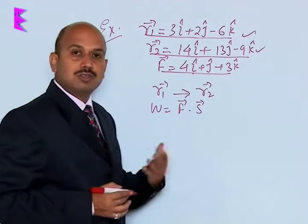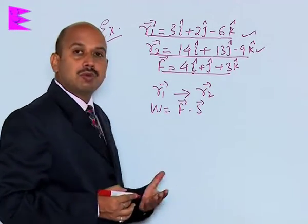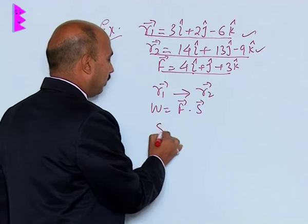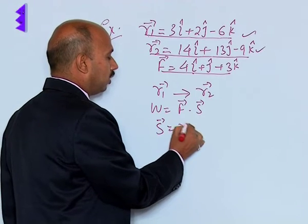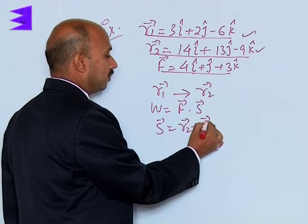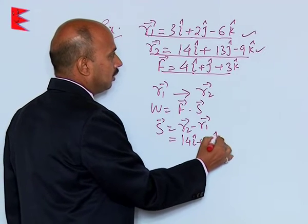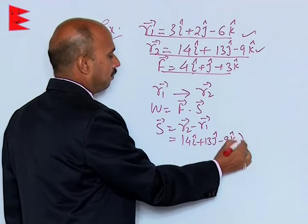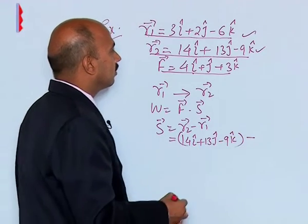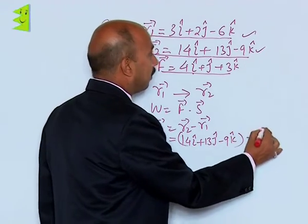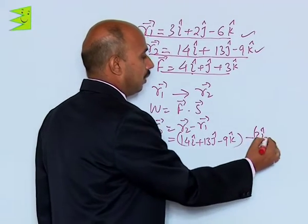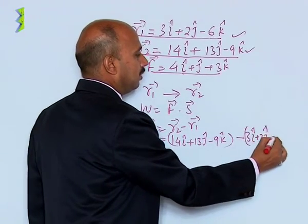Force we know, but we do not know the displacement. So first we have to calculate displacement. So we can write S = R2 - R1, that is your 14i + 13j - 9k minus 3i + 2j - 6k.